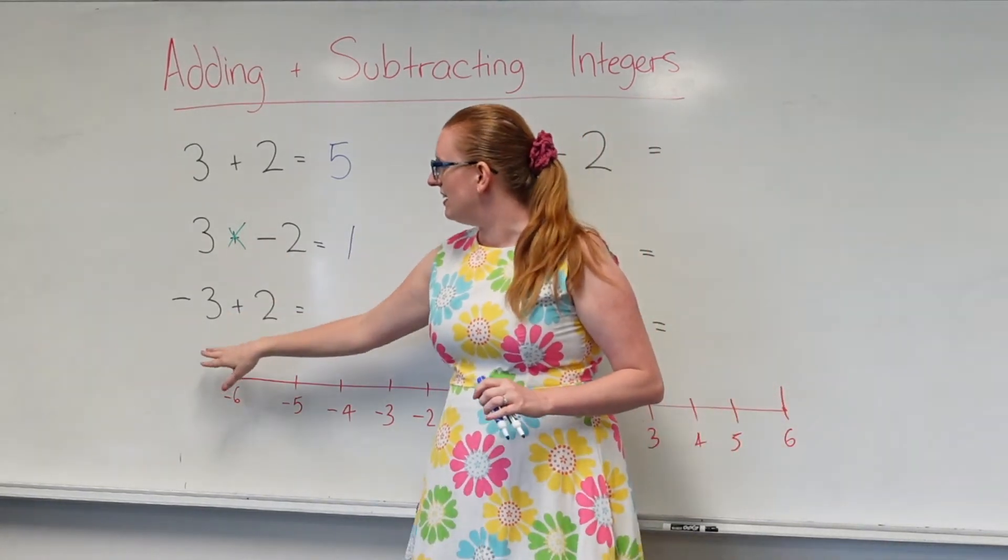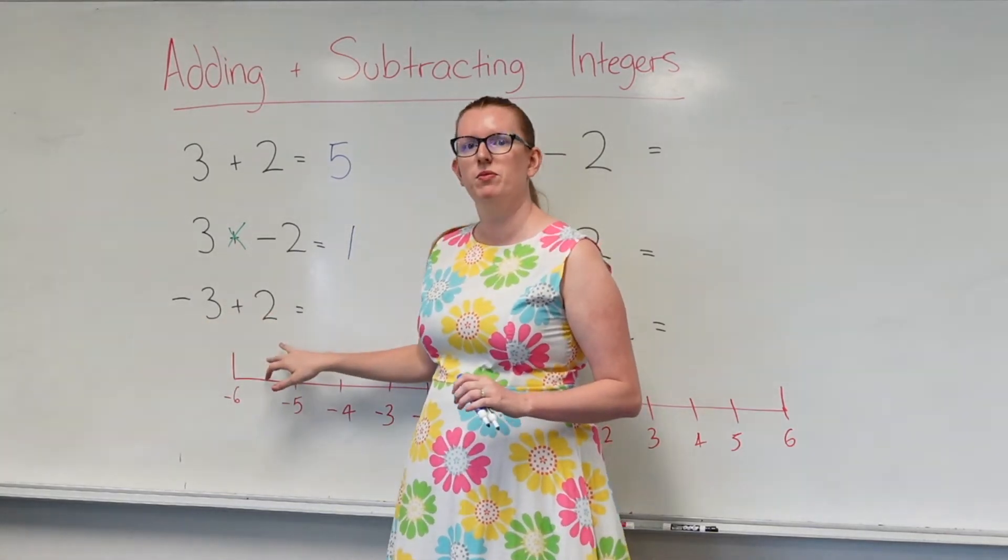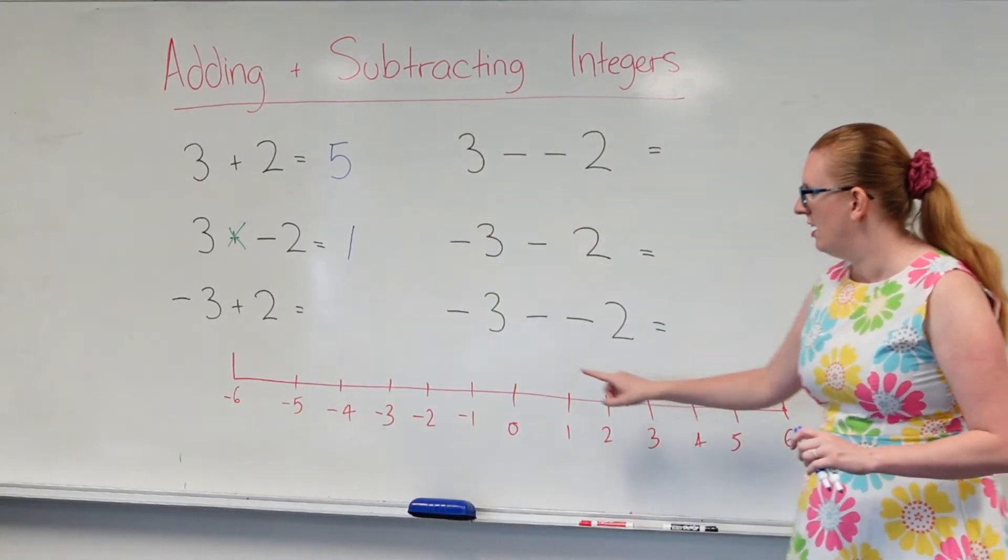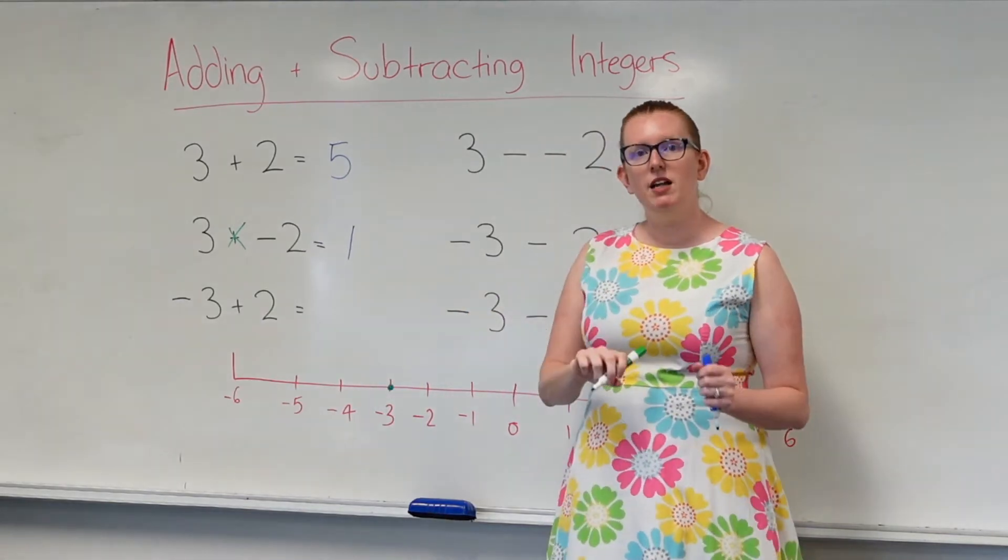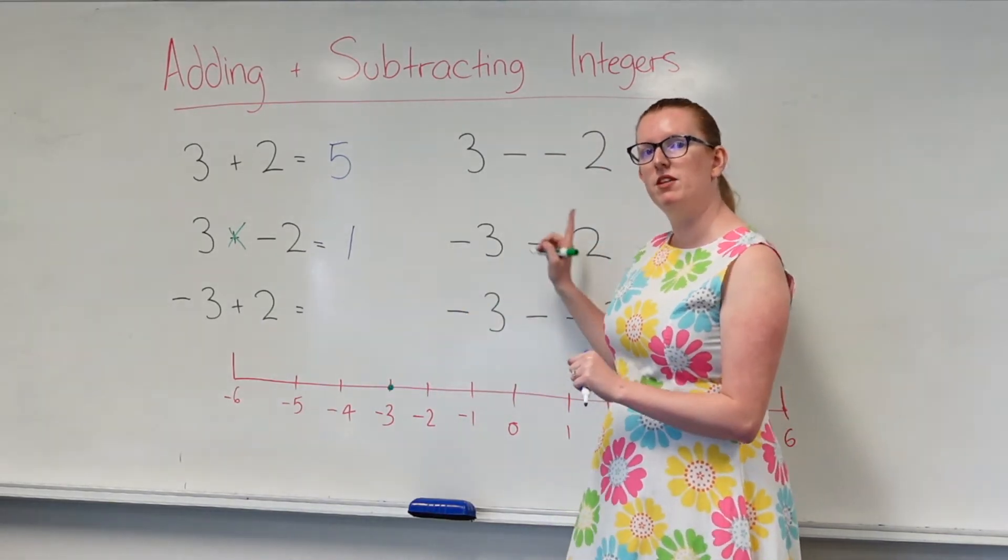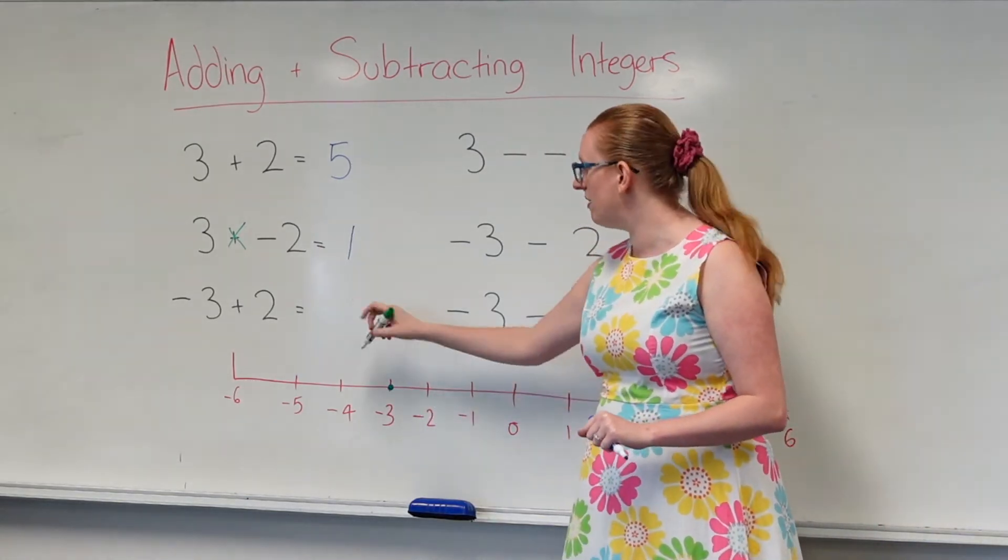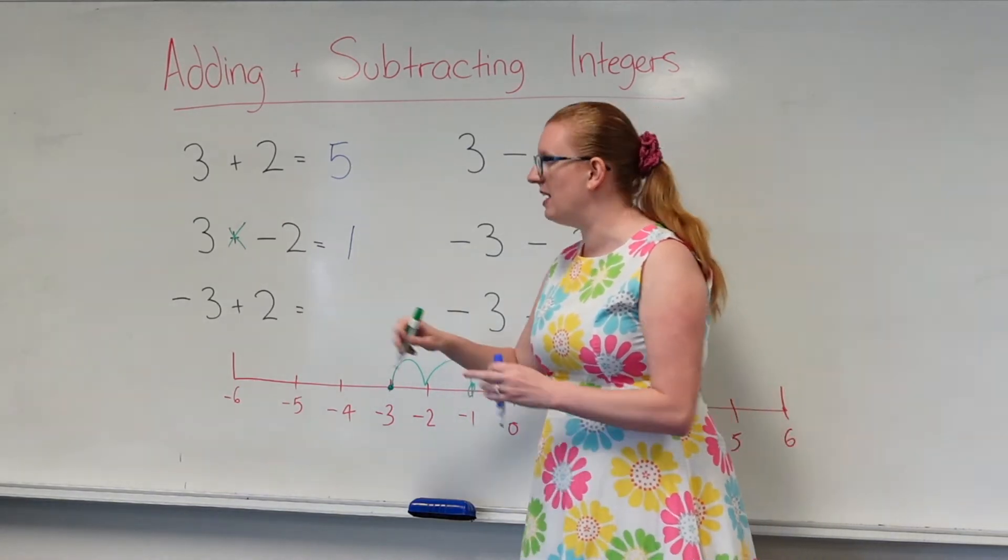Now let's have a look down here. Here we've got minus 3 plus 2. If I were to draw out a number line, I've got negative 3 here, and a plus means I'm moving back up the number line towards the big numbers, towards the positive numbers. Now I'm going to be adding 2. So, 1, 2. My answer would be negative 1.